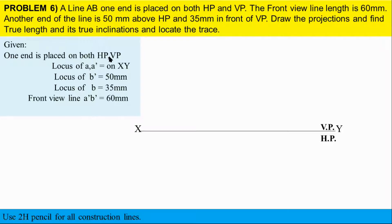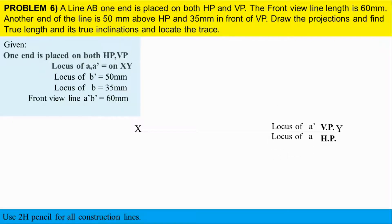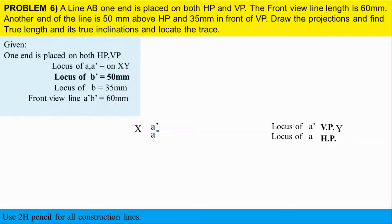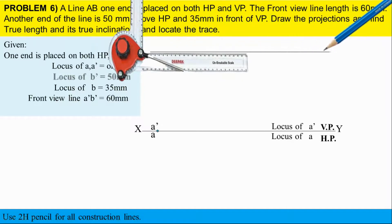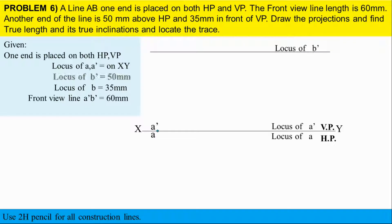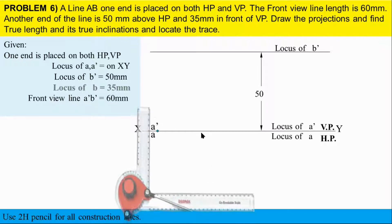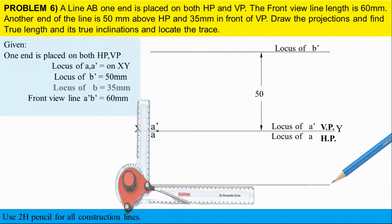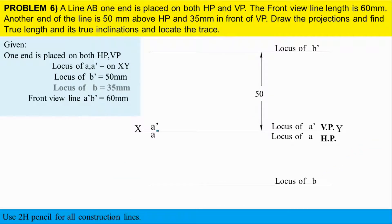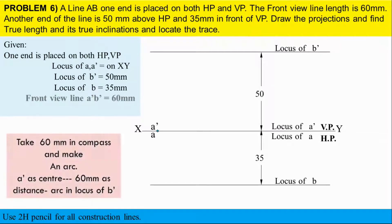XY — locust of A is on XY. The locus of B-dash is 50mm above XY in the front view. The locus of B in the top view is 35mm below XY. Go to given data: read the front view line length — 60mm.